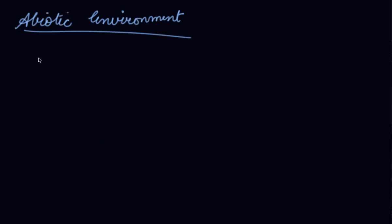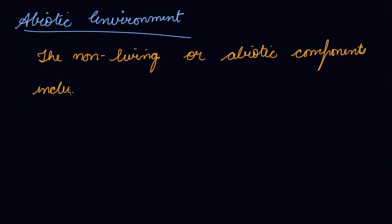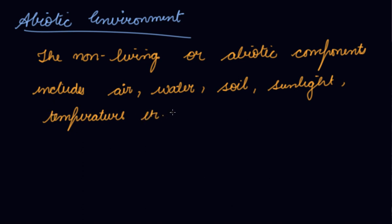Now abiotic environment - the non-living components which we get naturally, non-living or abiotic components include air, it is naturally available, it is a natural environment but it is non-living, water, soil, sunlight, temperature, etc. These constitute the physical environment.